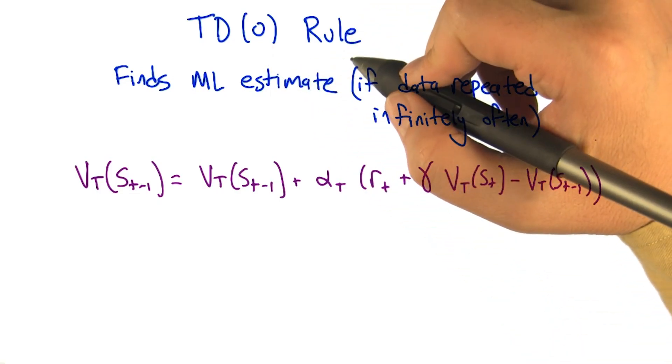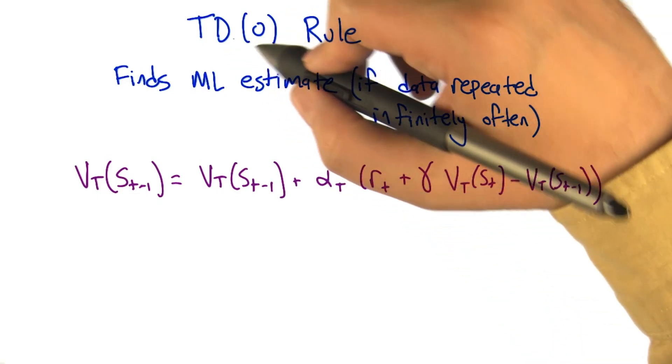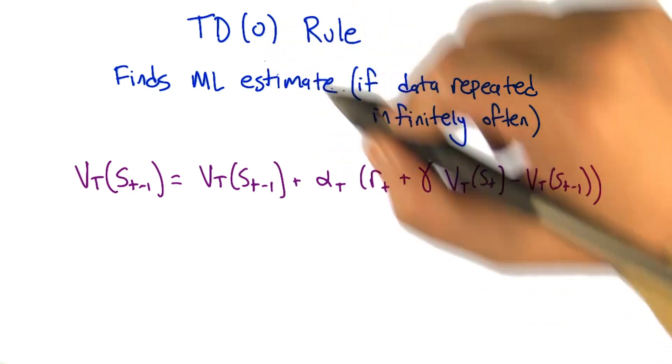All right, so here is a rule we're going to call the TD(0) rule, which gives it a different name from TD(1), but eventually we're going to connect the 0 and the 1 together.